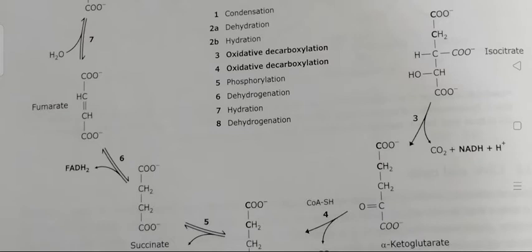In step 7, water is added to fumarate, placing a hydroxyl group next to a carbonyl carbon. In step 8, the last oxidation step, the carbon carrying the hydroxyl group is converted to a carbonyl group, regenerating the oxaloacetate needed for step 1. NAD+-linked malate dehydrogenase catalyzes the oxidation of malate to oxaloacetate.